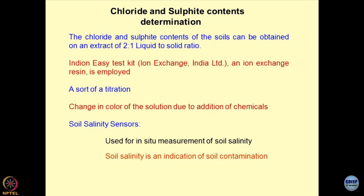When we talk about the contamination of soils, particularly two components — chloride and sulphide — become very important to be detected. Why? Because if you have soils with a lot of chloride and sulphide, as a geotechnical engineer you will face problems: foundations could get corroded.